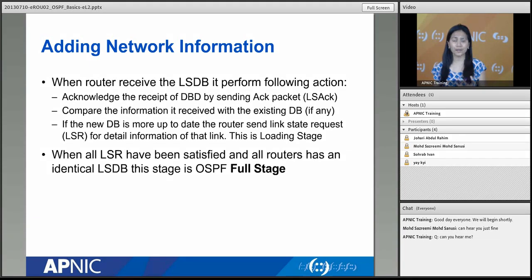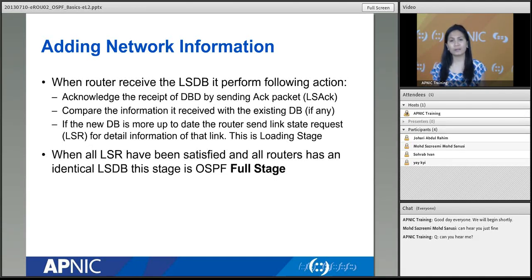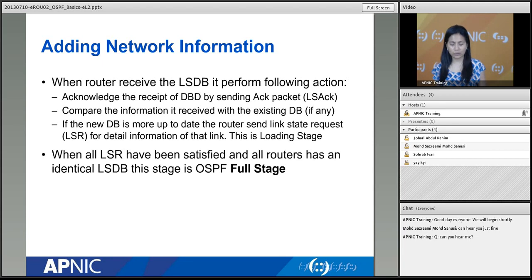The third possibility: if the router doesn't have a topology table yet, it asks for the full information — not just updates — and the complete network data is sent. That's how it builds its topology table. At this stage the routers enter what's called the 'full' state — they synchronize their whole topology table. That is the sequence followed when creating neighbor relationships with everyone running OSPF.